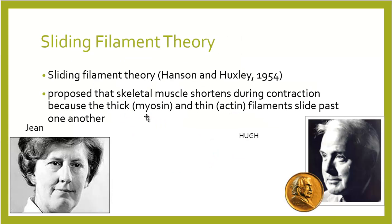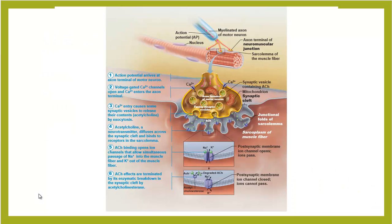Sliding filament theory is what we work off of for anatomy and physiology to explain muscle contraction. Gene Hansen and Hugh Huxley, in 1954, were instrumental in developing this model. They proposed that skeletal muscles shorten by the actions of myosin and actin sliding past each other — hence the term sliding filament theory. If you take a closer look at muscle contraction, we'll begin with a nerve firing on the sarcolemma of a muscle. We'll blow this up bigger in a minute.